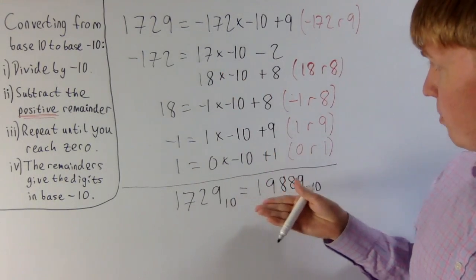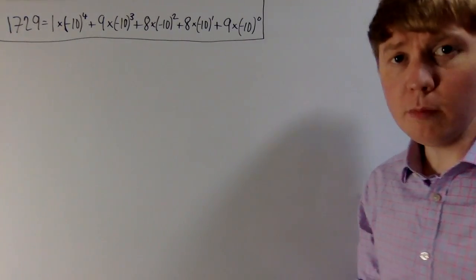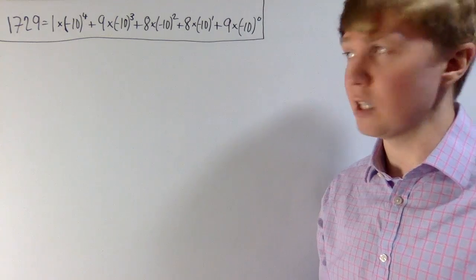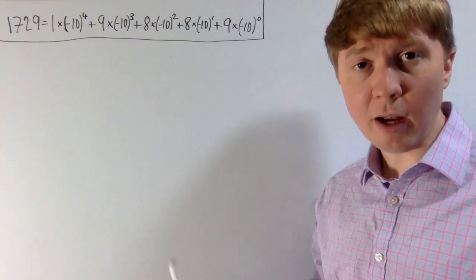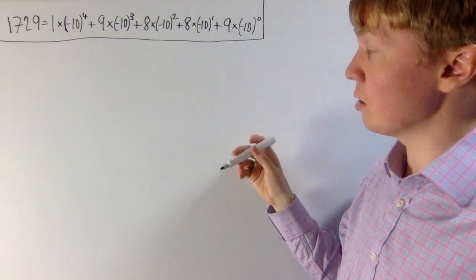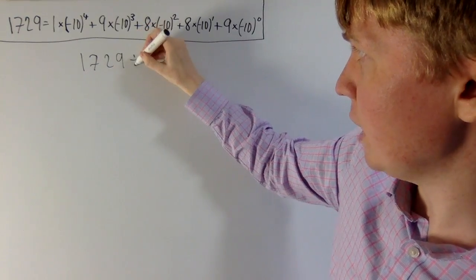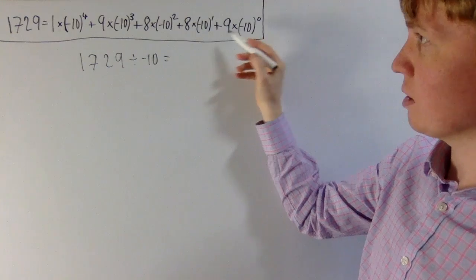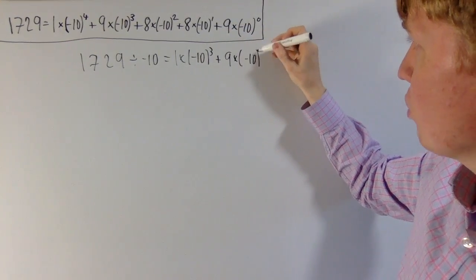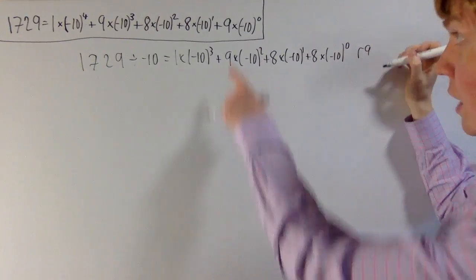What we'll do now is have a proper look at why this method works. If we assume that a number does have a base minus 10 representation, we can see why this procedure of repeatedly dividing by minus 10 and taking the remainder gives us the digits. Starting with 1,729 divided by minus 10, because we've already got it in this nice representation, you can see we just reduce all the powers of minus 10 by 1. So we get 1 times minus 10 to the power of 3, plus 9 times minus 10 squared, plus 8 times minus 10 to the power of 1, plus 8 times minus 10 to the power of 0, with a remainder of 9 from the ones term.